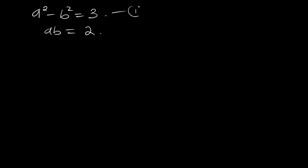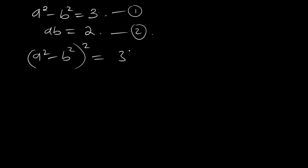Let's call this equation 1 and this equation 2. Squaring equation 1, you have a squared minus b squared, all squared, equal to 3 squared. The square of this expression gives you a to the power 4 plus b to the power 4 minus 2a squared b squared, which is equal to 9.